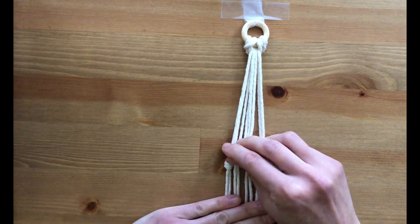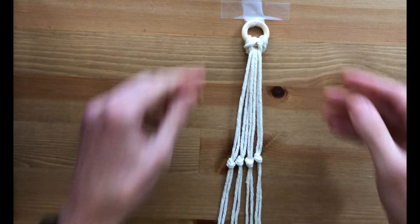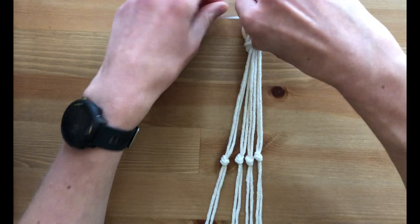There we go. So that is the first level of knots, and now I'm just going to move this up so you can see in the camera view.